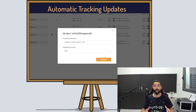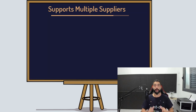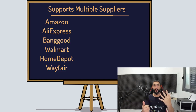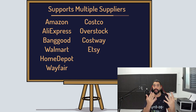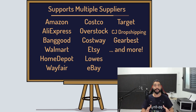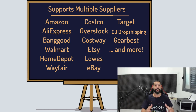Your customers will always be able to track their packages and they'll be updated as soon as their tracking information is available. AutoDS also supports over 15 suppliers that you can work with starting now, including Amazon, AliExpress, Banggood, Walmart, Home Depot, Wayfair, Costco, Overstock, Costway, Etsy, Lowe's, eBay, Target, CJ Dropshipping, Gearbest and more. We're always working hard and adding more so you can differentiate yourself from the competition and have an advantage over everyone else.